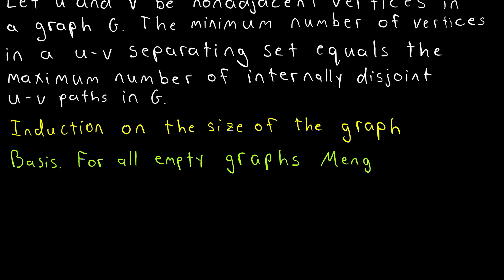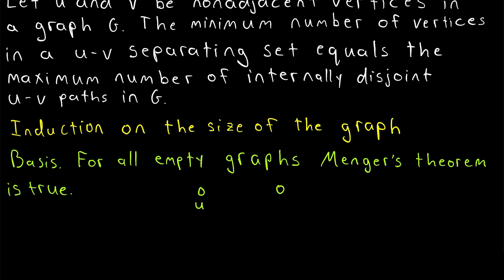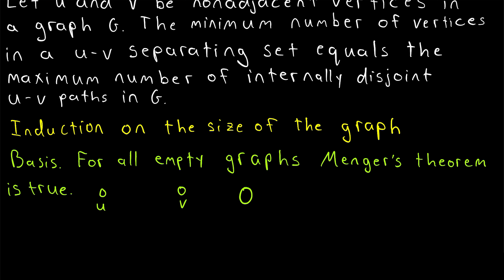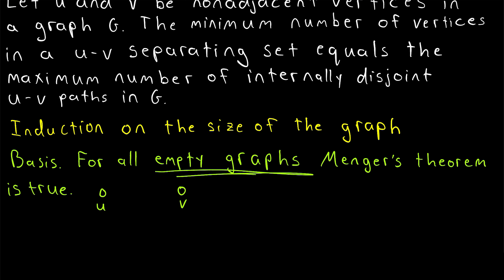These are graphs that have zero edges, which are called empty graphs. As is often the case, the proof is pretty trivial for the basis step. Menger's theorem is certainly true for all empty graphs, because given two vertices u and v in an empty graph — one that has no edges — u and v clearly must be disconnected since there are no edges. So the minimum number of vertices in a u-v separating set is zero. We don't need to delete any vertices, and there are also zero internally disjoint u-v paths. So the basis step is done.